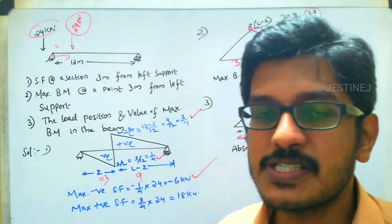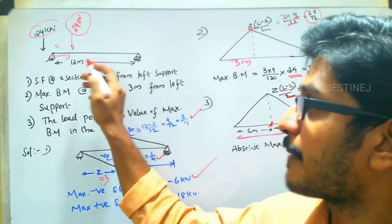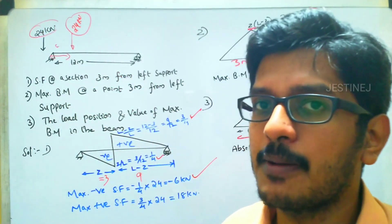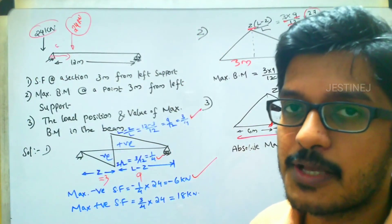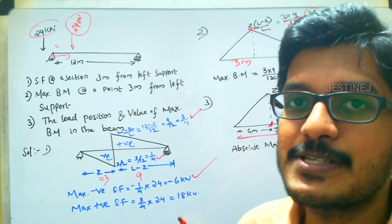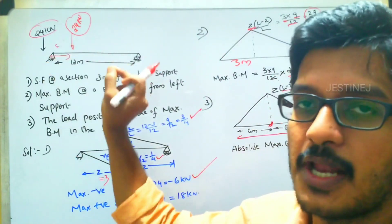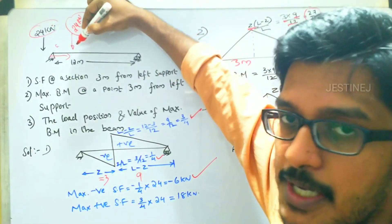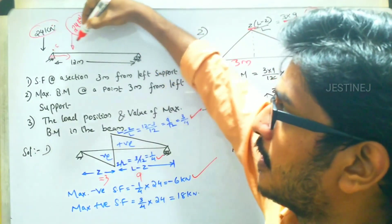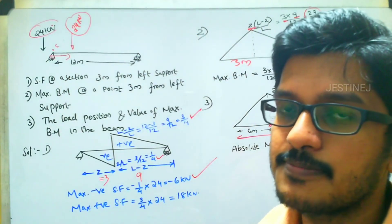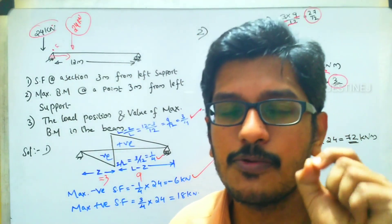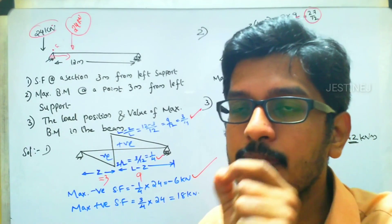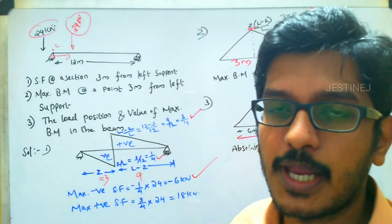In the given question, a simply supported beam is given with span length 12 meter, and a 24 kilo Newton load is traveling from the left side to the right side. We have to find the shear force at a distance 3 meter from the left support when the 24 kilo Newton load reaches that point. Using the influence line diagram, we already know how 1 kilo Newton travels throughout the beam.